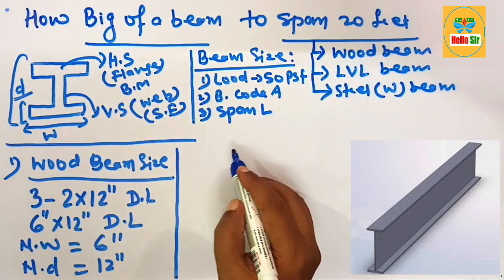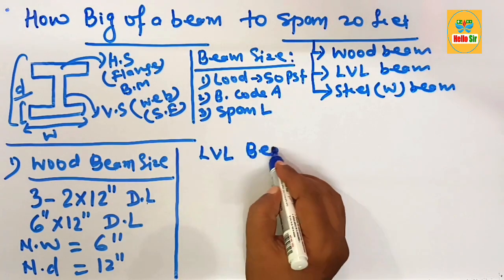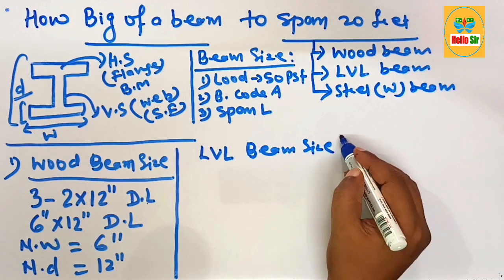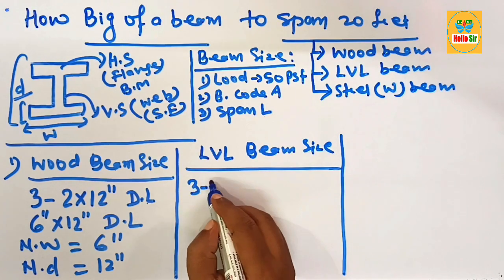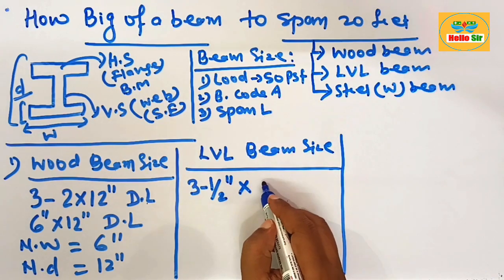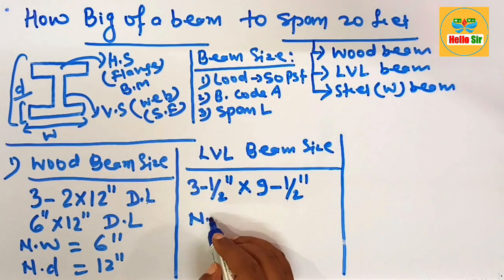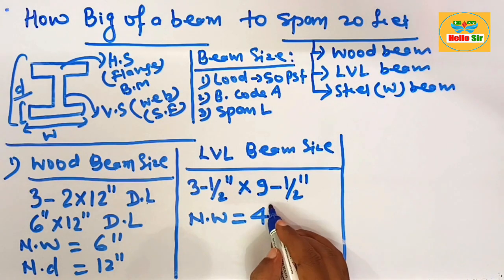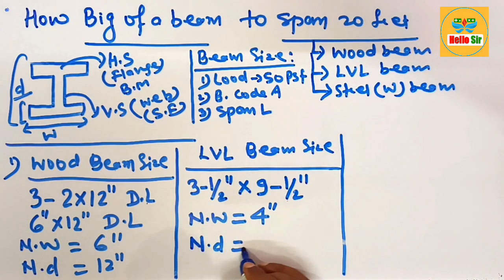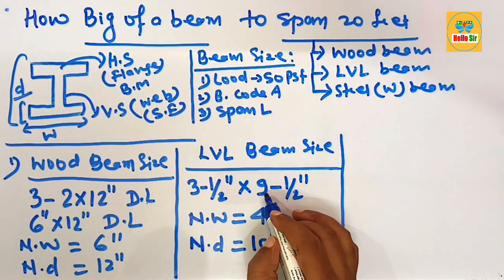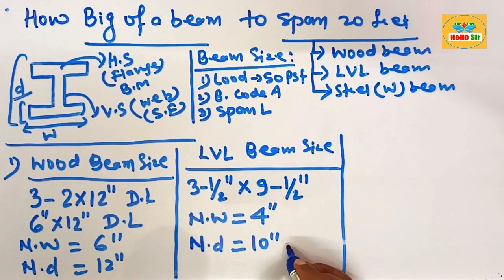Now consider the LVL (laminated veneer lumber) beam size required to span 20 feet. You can use double ply with a width of three and a half inches and a depth of nine and a half inches. The nominal width is 4 inches with an actual width of 3.5 inches, and the nominal depth is 10 inches with an actual depth of 9.5 inches. So you can use a double ply 10-inch LVL beam to span 20 feet.